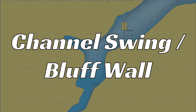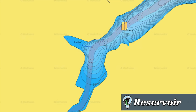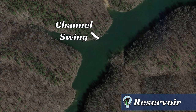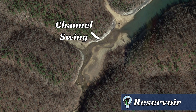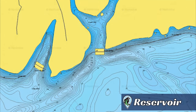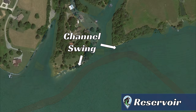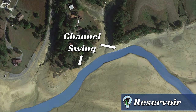Number six: Channel Swing or Bluff Wall. A channel swing is created when a Creek Channel runs very close to the shoreline. The closer the Creek Channel gets, the steeper the bank, and the steepest banks are called bluff walls. Taking the lake down four to five feet on Google Earth, we can see the Creek Channel running very close to the shoreline, creating a steeper bank with chunk rock that holds a lot of bass in the pre-spawn and post-spawn. If the Creek Channel swings close to two points, it creates two Channel Swing Points. If you hear "Channel Swing Point" or "Channel Swing Hump," it just means a Creek Channel is swinging very close to another type of structure like a point or a hump.